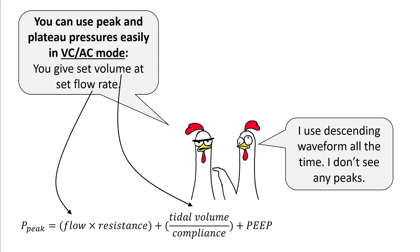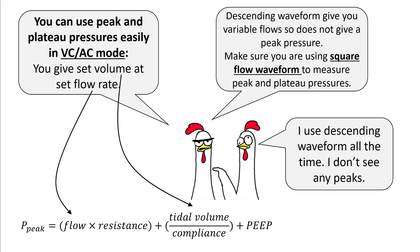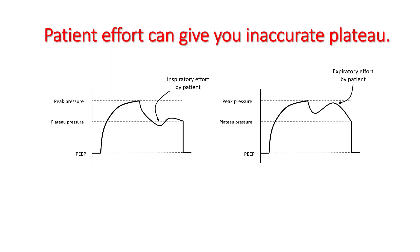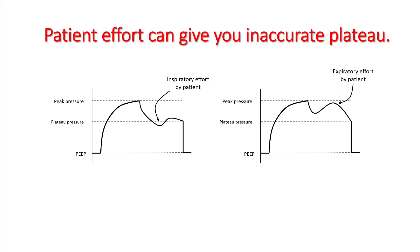One of the waveforms commonly used in VC-AC mode is the descending waveform, as it is more physiological and more comfortable for the patient. However, when performing an inspiratory pause, make sure you are using a square waveform, since measurement of peak pressure requires a constant flow. Using a descending waveform will not give you accurate peak pressure measurements. Patient inspiratory or expiratory effort during the inspiratory pause can also give you inaccurate or no plateau pressure, so make sure there are no spontaneous patient breaths.